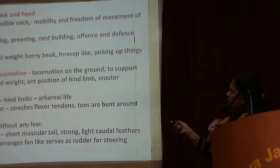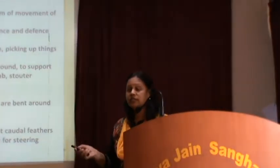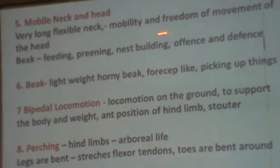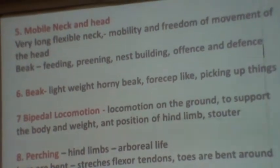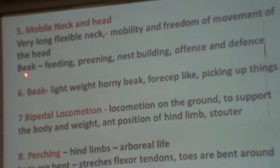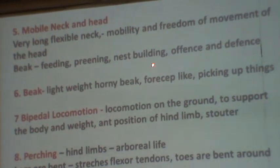In birds, the neck is mobile. Birds can move their neck up to 180 degrees — a special adaptation seen only in birds. A very long, flexible neck is present, and its mobility is due to the vertebrae in the neck region. The beak is lightweight and useful for feeding, preening, nest building, offense, and defense. Teeth are absent in the jaws.